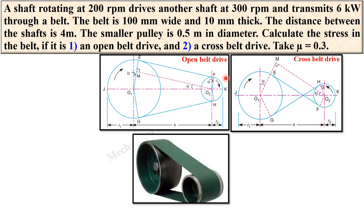The smaller pulley is 0.5 meter in diameter. Calculate the stress in the belt if it is a case of an open belt drive, and also if it is a cross belt drive. In both cases we have to find the stress in the belt.